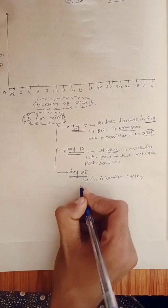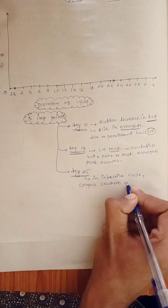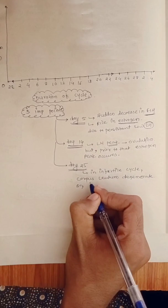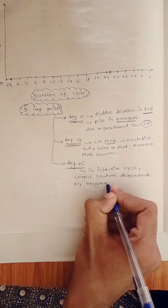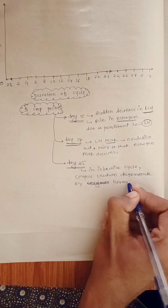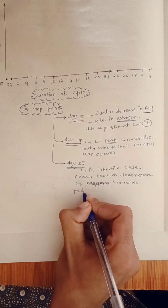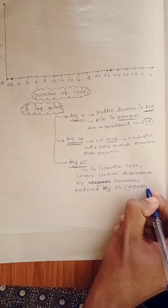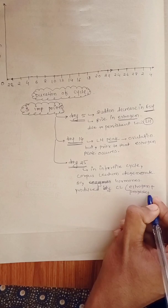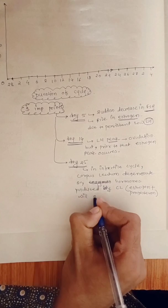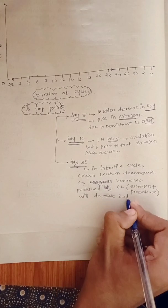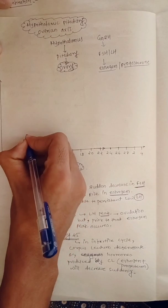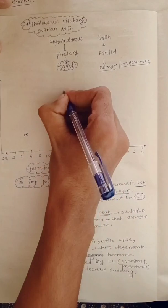On day twenty-five, in a normal infertile cycle, the corpus luteum — which is formed after ovulation — will get degenerated ten to twelve days after ovulation, that is nearly on day twenty-four to twenty-five. Due to the degeneration of the corpus luteum, the hormones secreted by it will get reduced. These hormones are estrogen and progesterone, so the levels of both will decrease on day twenty-five.